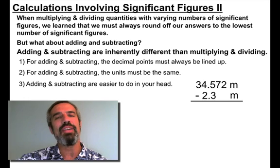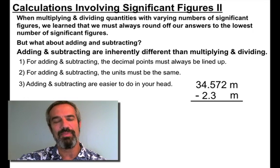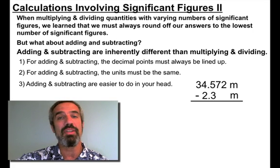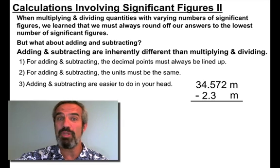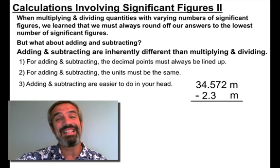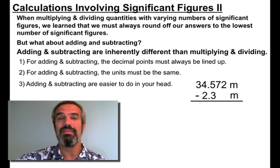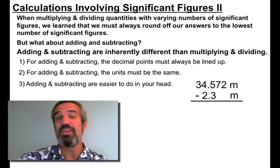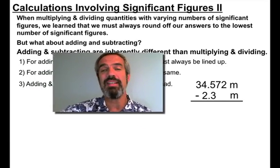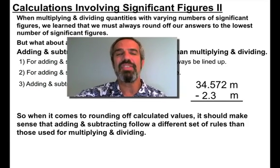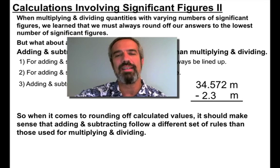Third thing, adding and subtracting are easier to do in your head, much easier. For instance, if I said what's 16 plus 13? I'm hoping you would say 29. If I said 16 minus 13, I'm hoping you would say 3. If I said 16 times 13, I'm thinking you would probably be saying, where's my calculator? If I said 16 divided by 13, I know you'd be looking for a calculator. So when it comes to rounding calculated values, it should make sense that adding and subtracting follow a different set of rules than those used for multiplying and dividing.